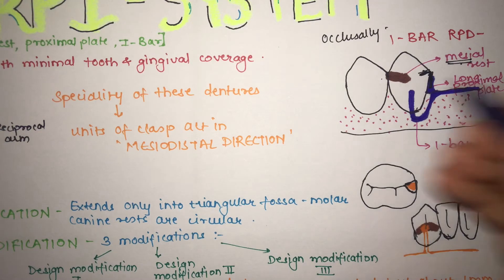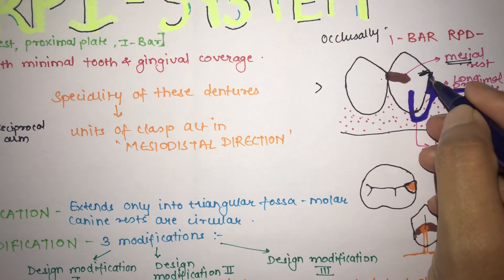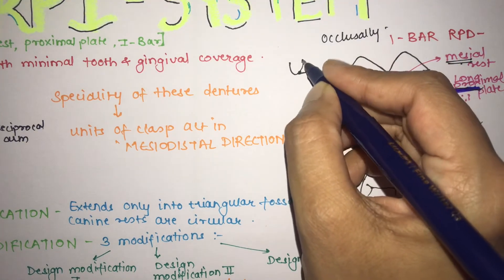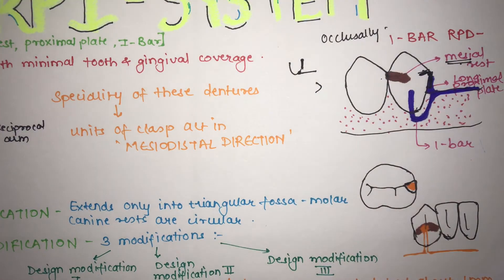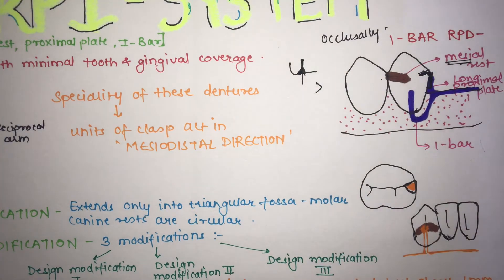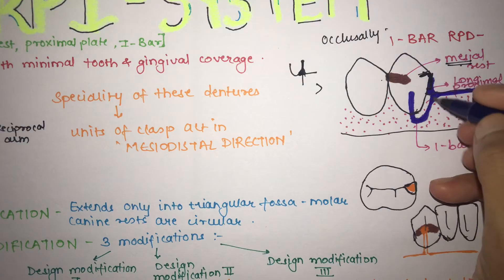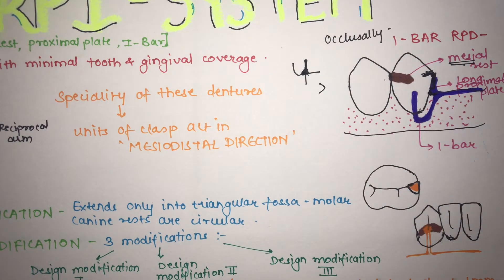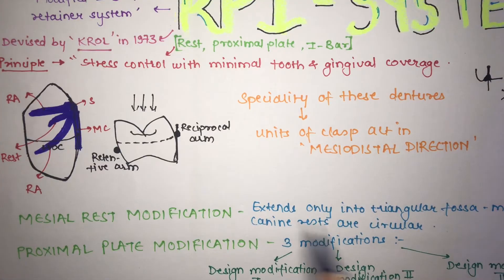There is a problem with the conventional proximal plate because there is a space present between the tooth and tissue contact. In conventional RPDs, this space causes food impaction and can lead to hypertrophy of the tissue. To avoid this, in the I-bar system the proximal plate is made very long, covering the tooth-tissue contact area. This is the basic difference between the conventional and the I-bar RPD.